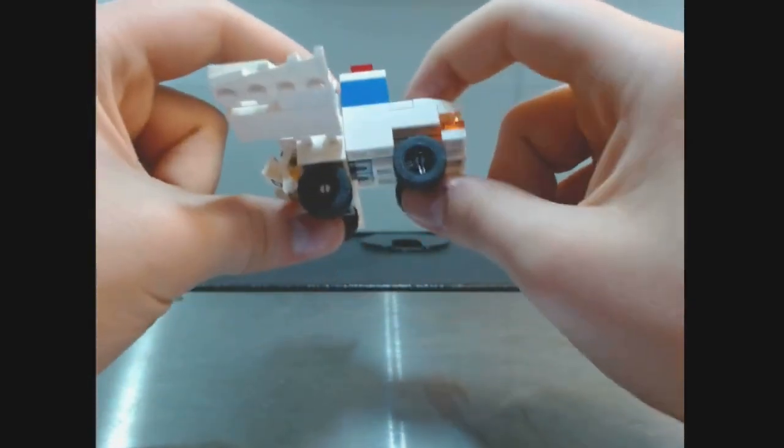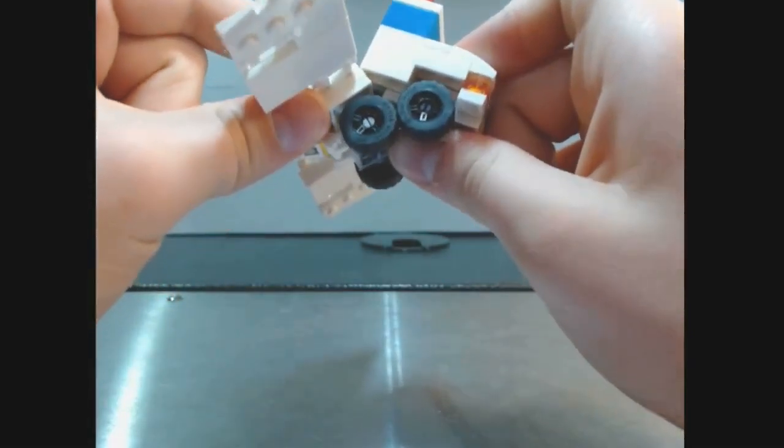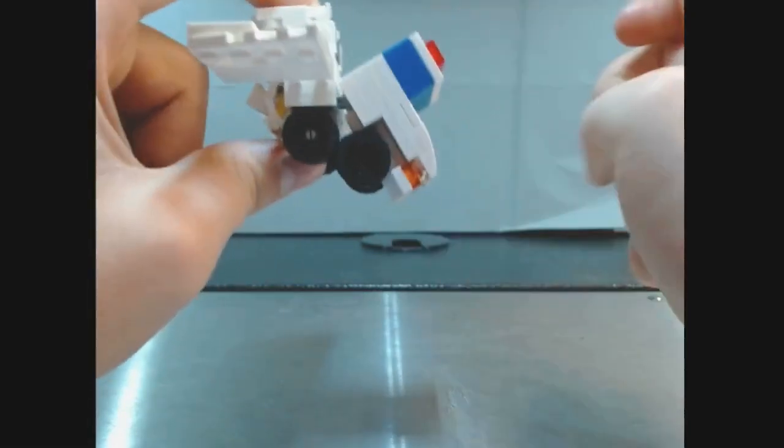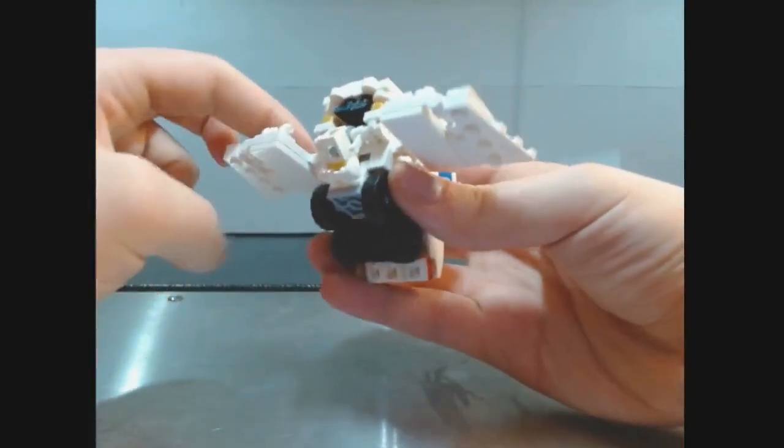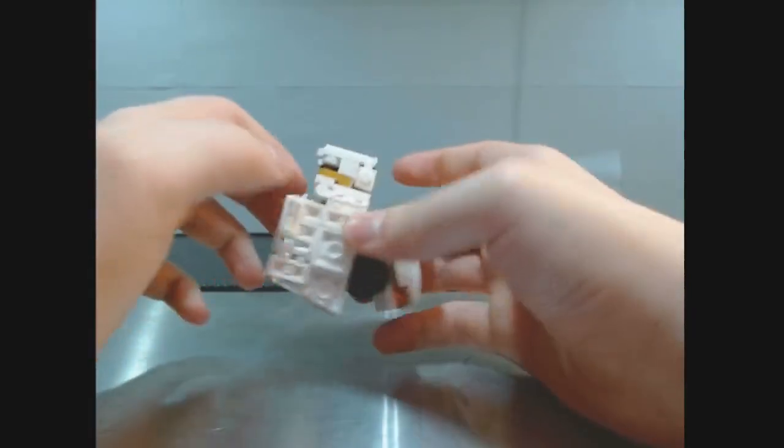And then, we're going to take the front of the truck. And it's just going to fold down a bit. Just like that. Just to get out of the way. And then, after that, we can fold the wings all the way down. So they're out of the way.